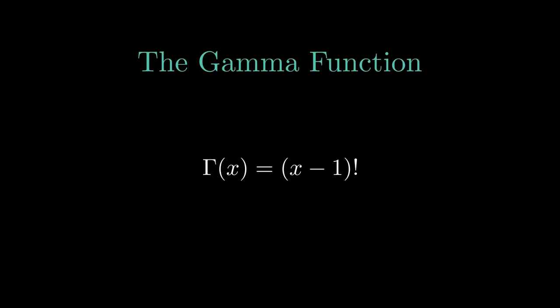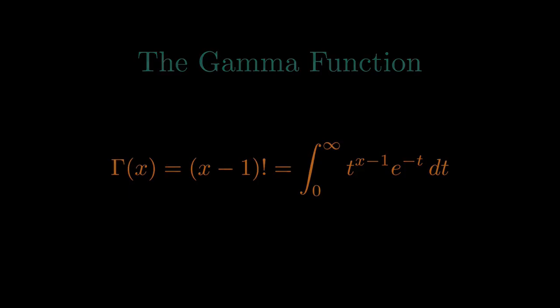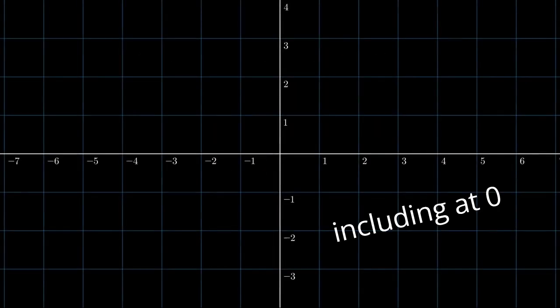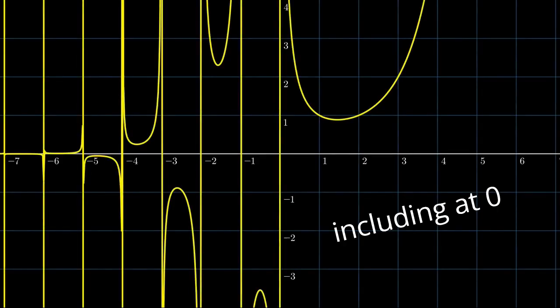Gamma of x is the integral from 0 to infinity of t to the power x minus 1 times e to the power negative t dt. This is what its graph looks like. Notice how the function at negative integers is undefined. That is because of the recursive property of the factorial function. This ultimately means that the identity doesn't hold true for integer values of x.